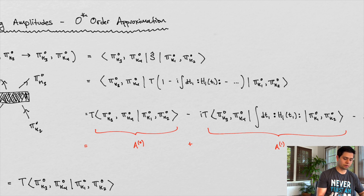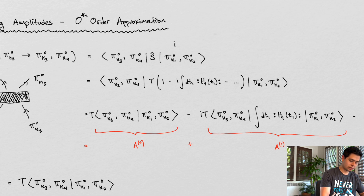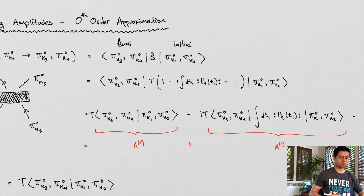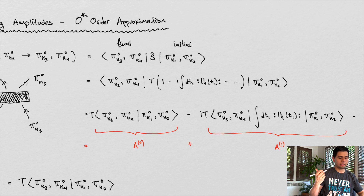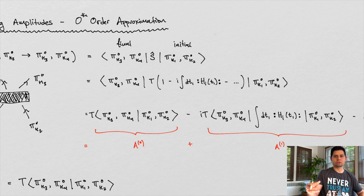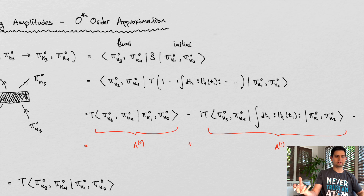A pion traveling at k1 and a pion traveling at k2 interact, and out come two pions at momenta k3 and k4. What we can do is take the inner product between those two states — the initial state and the final state. The amplitude is essentially the inner product between the initial and final state when we evolve them using the S-operator. This S-operator was what we talked about in the Dyson series, when we needed a Hamiltonian operator that obeyed the rules of the Schrödinger equation — it was a time-evolving operator.